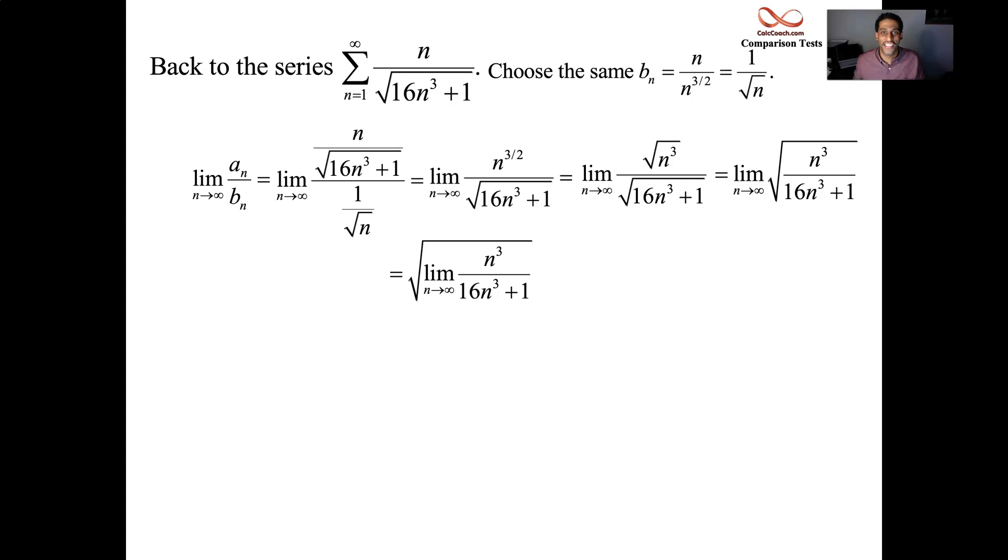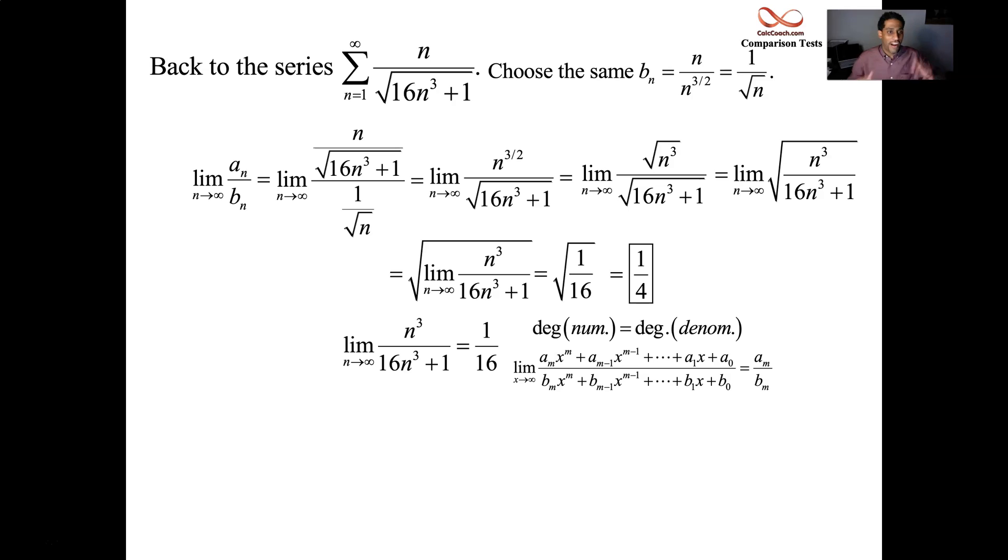And then you could use back when you first did limits at infinity and you had a ratio of polynomials called a rational function. And the degree of the numerator equals the degree of the denominator. Then you could just look at the ratio of the leading coefficients. And that would be your answer. So this is one sixteenth. That's not the final answer though. You have to take a square root. And we end up with one fourth. Our limit is a finite constant, one fourth. It means that they behave alike. What does your series do? Your b sub n? One over root n? That's a p series with p equals a half. Diverges. So a sub n also diverges.